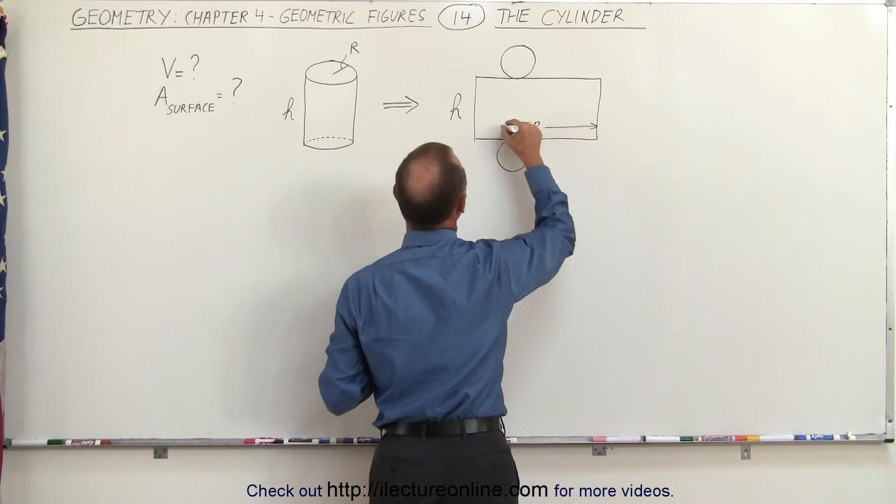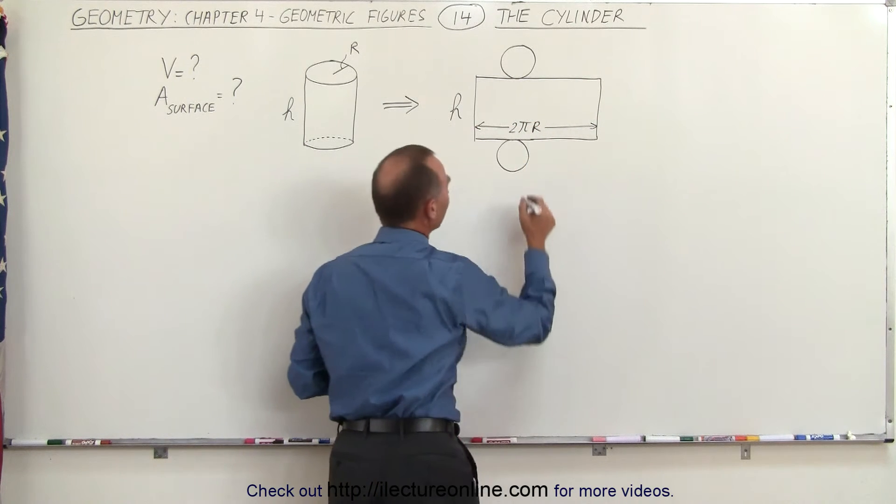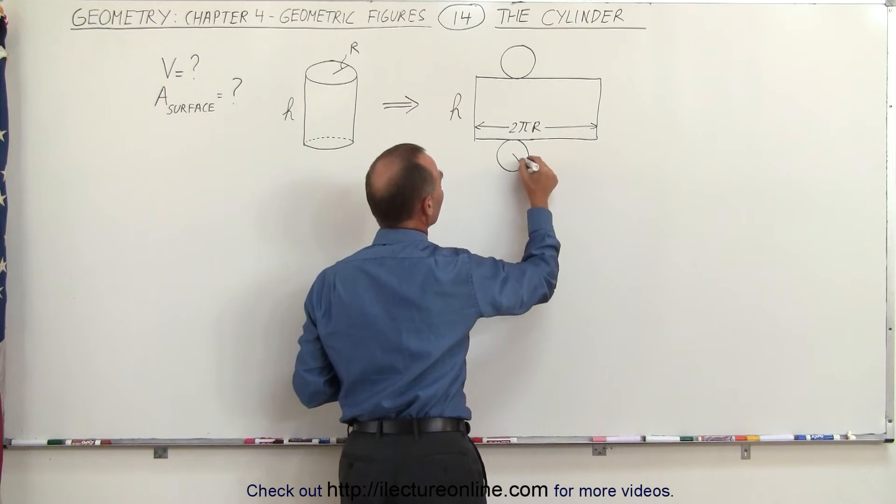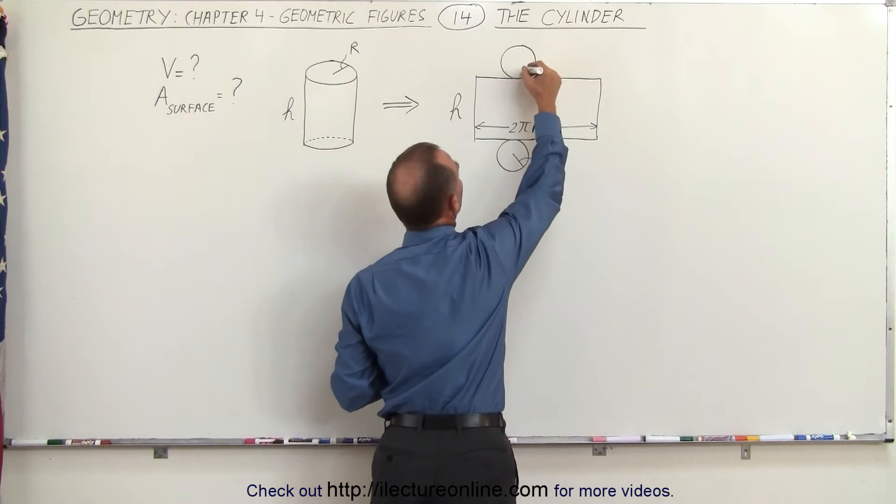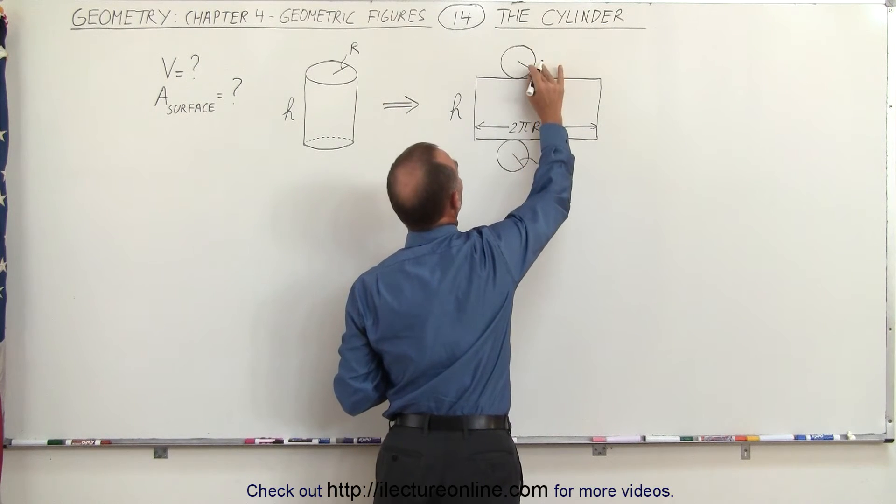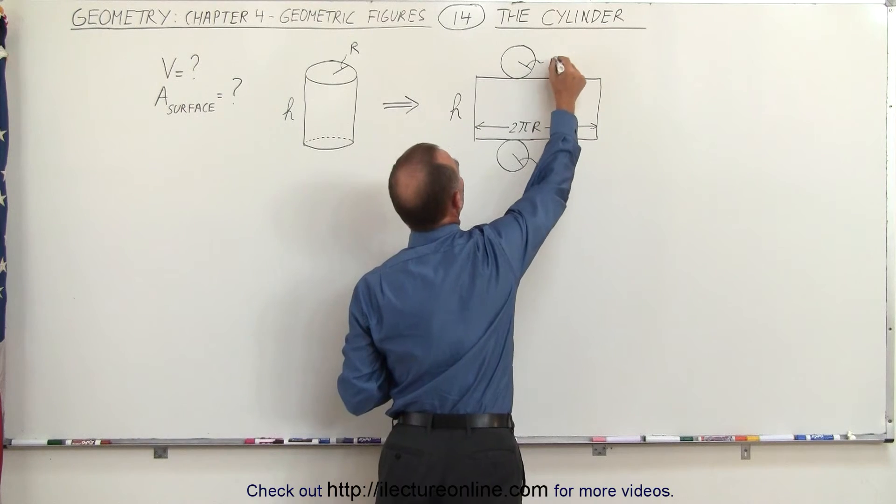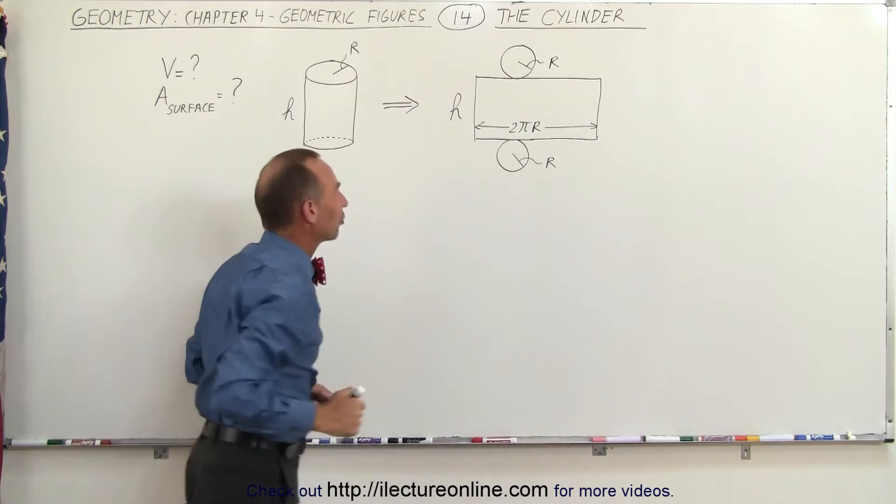From there to there, that would be the length of that rectangular portion. And then this here would be the little circle with radius r. And here this would be a circle with radius r, which would be the top and the bottom portion of the cylinder.